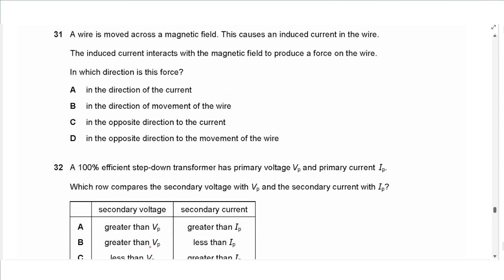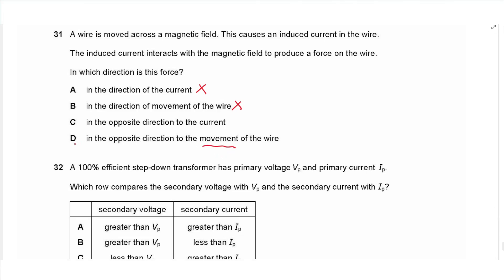Question 31: a wire moved across a magnetic field induces a current, which then produces a force on the wire — this is Lenz's law. The induced force always opposes the change, so it acts opposite to the direction of movement of the wire. The answer is D.